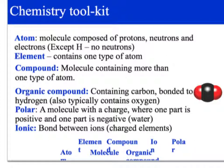An organic compound — we deal with a lot of organic compounds in biology. They contain carbon bonded to hydrogen and usually also contain oxygen. A really good example is carbohydrates: they always go in the ratio of one carbon to two hydrogens to one oxygen.